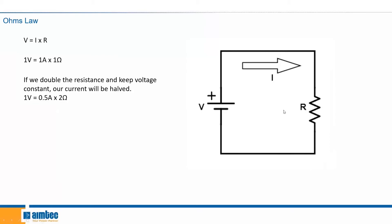Looking at the diagram, where we see R, that is the symbol for resistance in an electrical circuit. Where we see V, you see a longer horizontal line and a shorter horizontal line — this is the symbol of your power source — and then you see the plus side. By convention, electricity flows from plus to minus. So the direction of the arrow here represents the direction of the current flowing through your circuit, and this is depicted by I, as we've seen earlier.